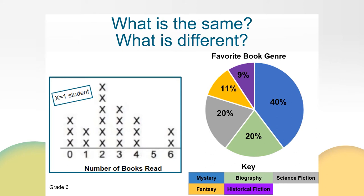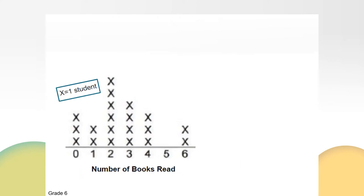First, let's look at the data on our line plot. How many students were surveyed? Since each X represents one student, I can count all of the X's and see that 20 students were surveyed. How might this help me construct a circle graph? Well, I know that 20 students represent the total or whole, so I can break the circle graph into 20 equal pieces. Each piece will represent one student or 1/20th of the circle graph.